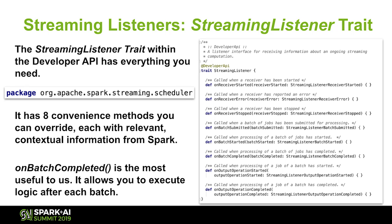Those methods include onReceiverStarted, onReceiverError, onReceiverStopped — those are executors receiving data from something like Kafka. Then onBatchSubmitted, onBatchStarted, and onBatchCompleted. Those are our favorite ones that we'll go into in this talk, because they have the most utility in our line of work at SpotX specifically.